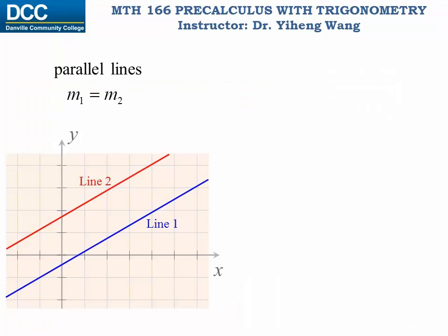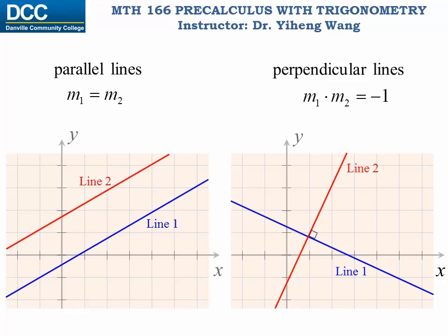Lastly, for two lines that are parallel to each other, they have the same rate of change, therefore their slopes equal to each other, m1 equals to m2. For two perpendicular lines, their slopes satisfy that the product of them equals to negative one, m1 times m2 equals to negative one. And of course, these lines do not include the special lines, the horizontal lines or the vertical lines.